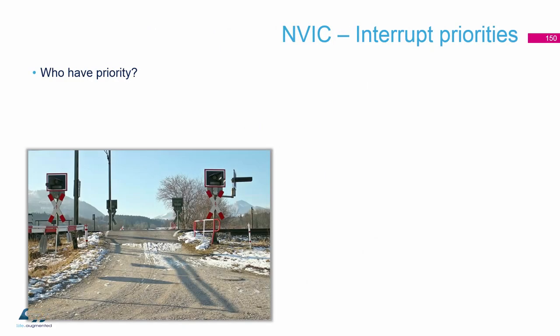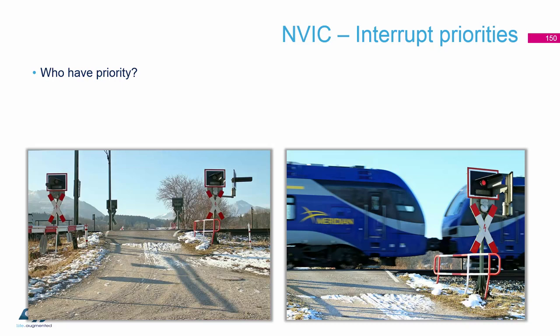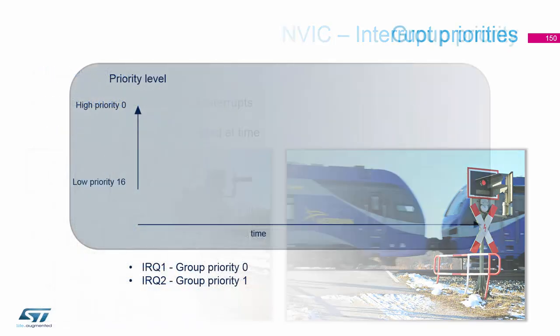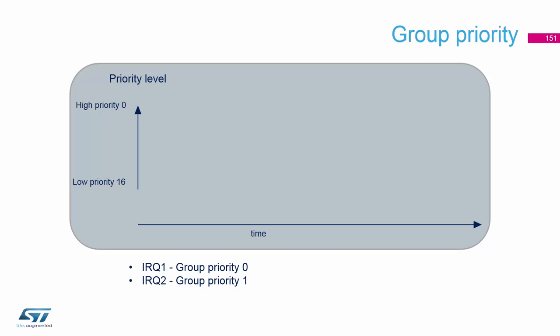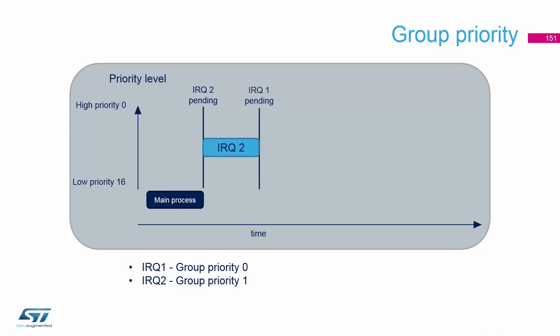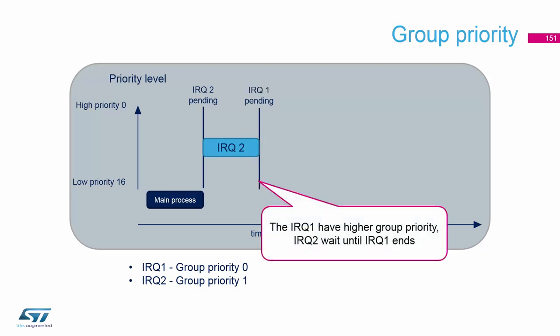We can have multiple interrupts and we need to decide which interrupts have the priority — what is for us the interrupt with the highest priority. For this, the NVIC has an internal arbiter. If we have one interrupt executing and we trigger a second interrupt which has a higher priority, that higher priority interrupt can be executed first.